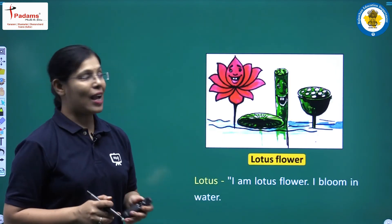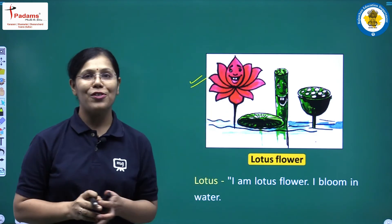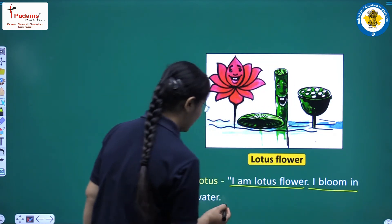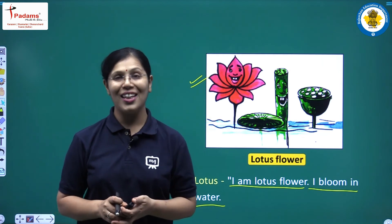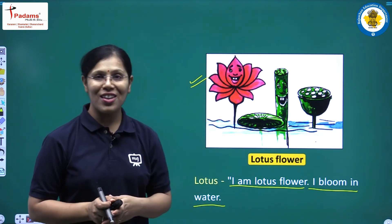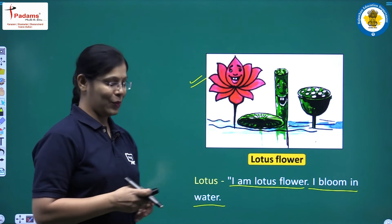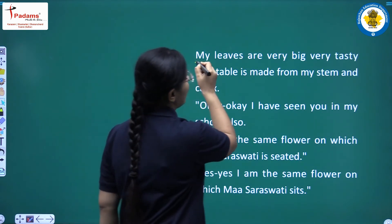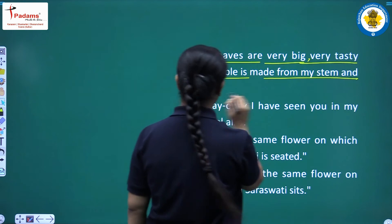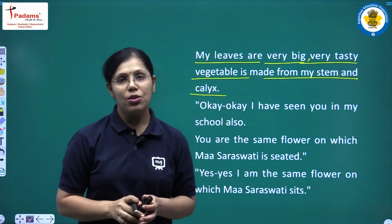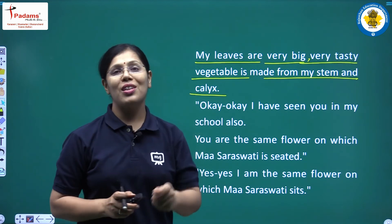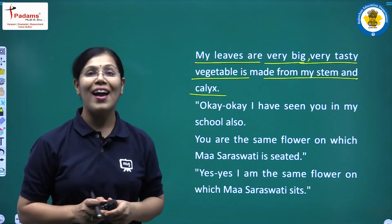That floating flower was actually the lotus flower, which is also a very beautiful flower. Lotus said: I am lotus flower, I bloom in water. Lotus told Khushi that I am lotus flower and I bloom only in water. You can see the lotus flower here. My leaves are very big, and a very tasty vegetable is made from my stem and calyx.